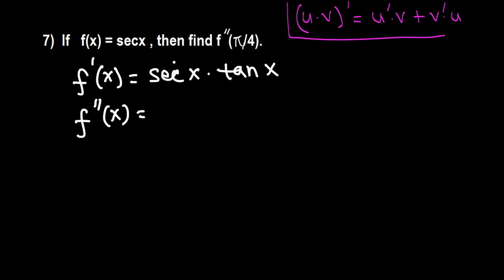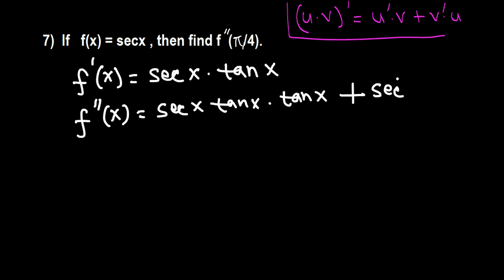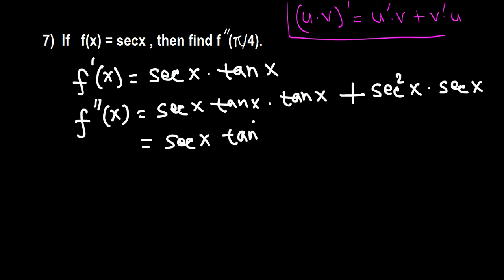So we apply the product rule here: the derivative of the first factor — derivative of secant x is secant x tangent x — times the second factor tangent x, plus the derivative of the second factor — derivative of tangent x which is secant squared x — times u, the first factor secant x. Simplifying: secant x times tangent squared x plus secant cubed x.